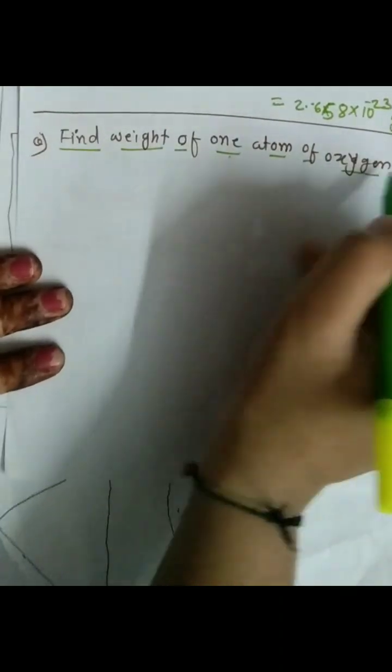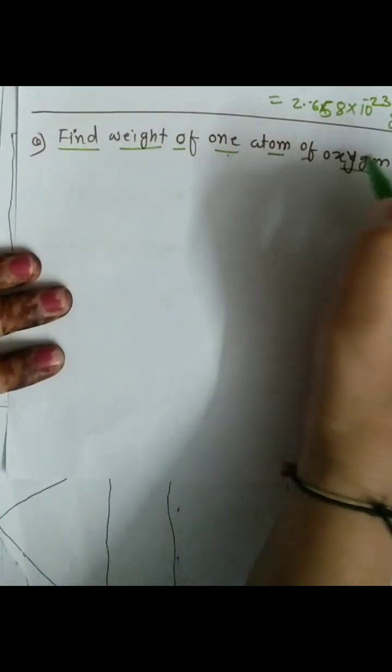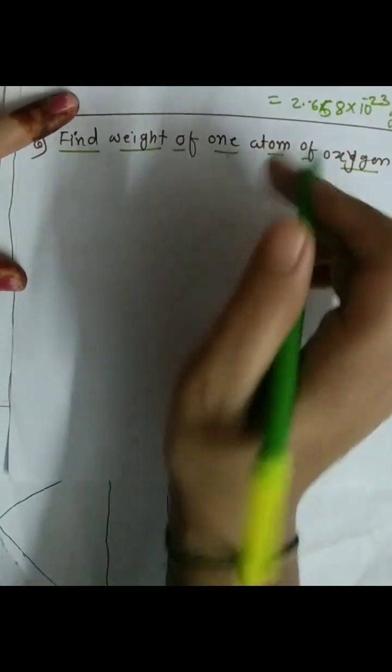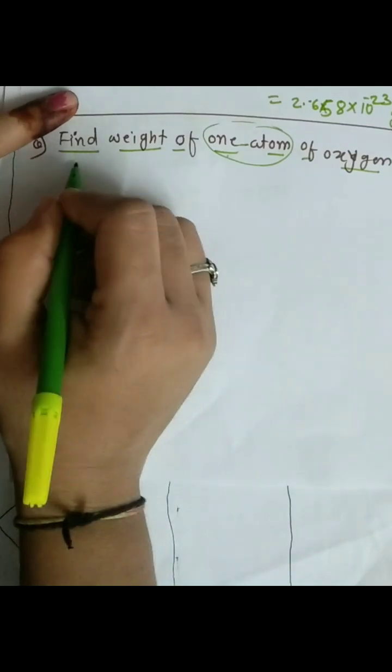Find weight of one atom of oxygen. We know that oxygen is found in dimer or trimer like oxygen molecule and ozone molecule, but here we have to calculate the weight of one atom of oxygen.